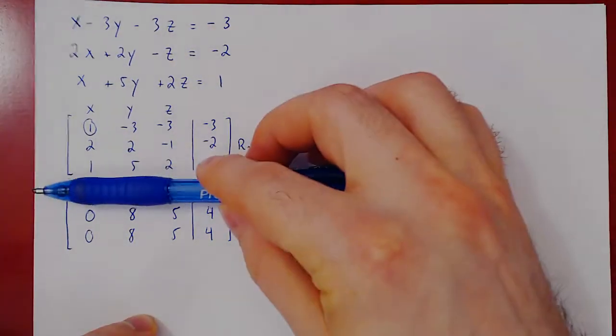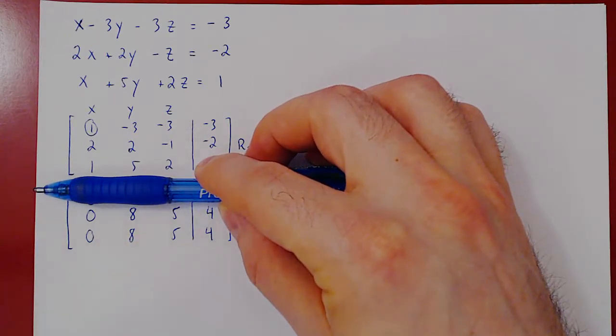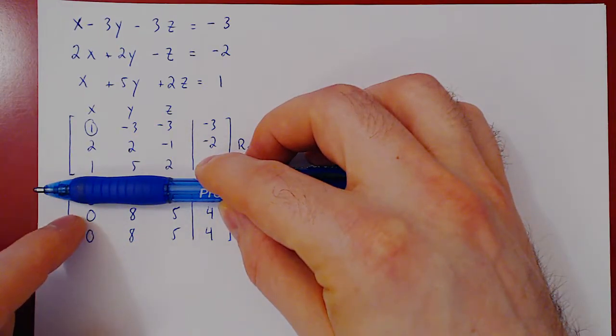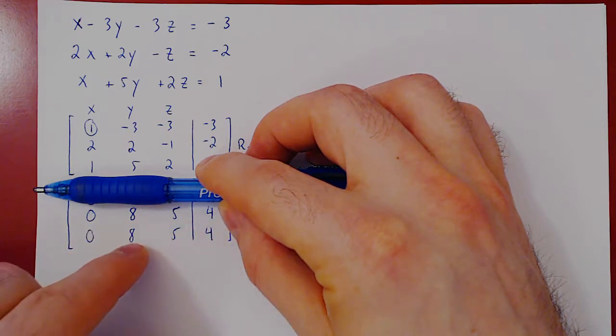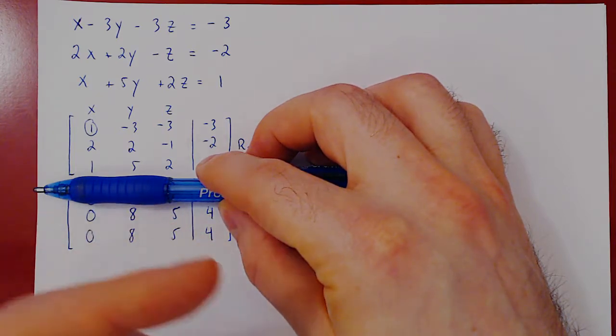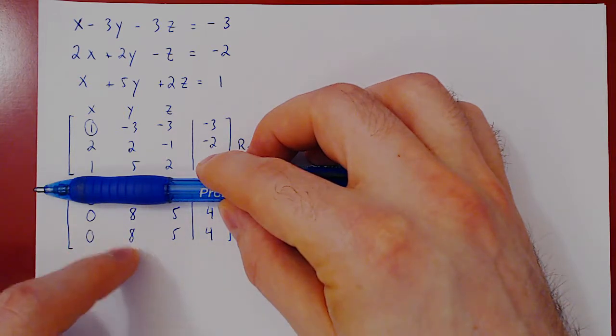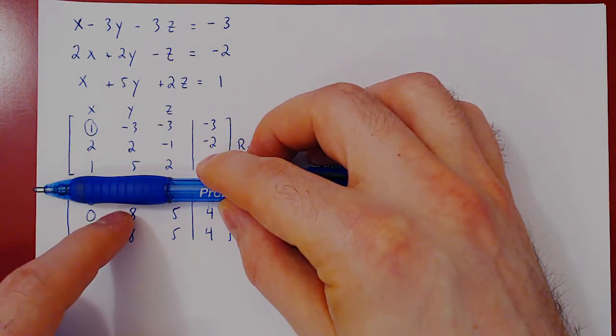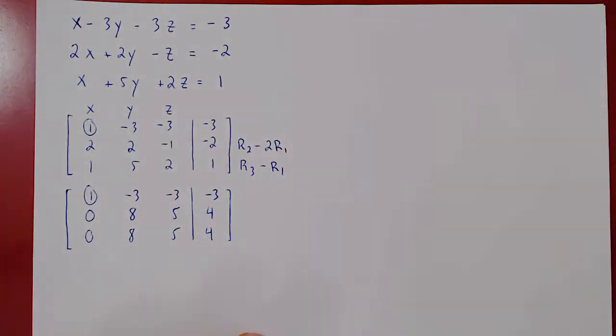Usually, if we follow the algorithm to the letter, we will multiply row 2 by 1 over 8 and then kill the entry here. We'll have 5 over 8 here. It's simpler to go backwards about this. We'll kill the 8 first. We'll do row 3 minus row 2, and then we'll create our second leading one.